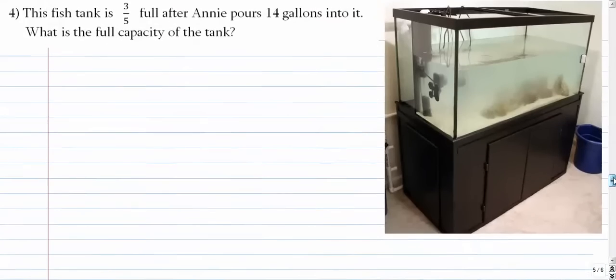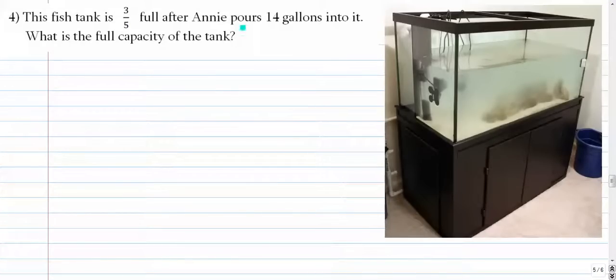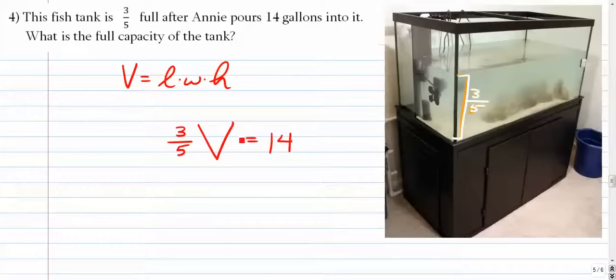Number four is a fish tank. We have a fish tank that is filled up three-fifths of the way. So three-fifths is 14 gallons, and the question is, what's the full capacity of our fish tank? So here we go. The volume of this thing is length times width times height, and they're saying that the fish tank is three-fifths full when there are 14 gallons in it. So three-fifths of the overall volume is 14 gallons. So three-fifths times V is 14.